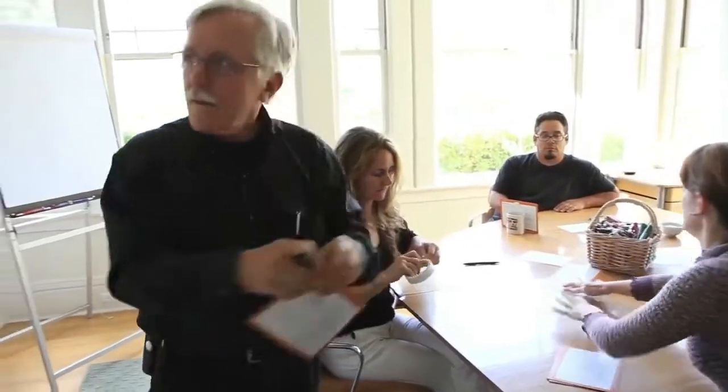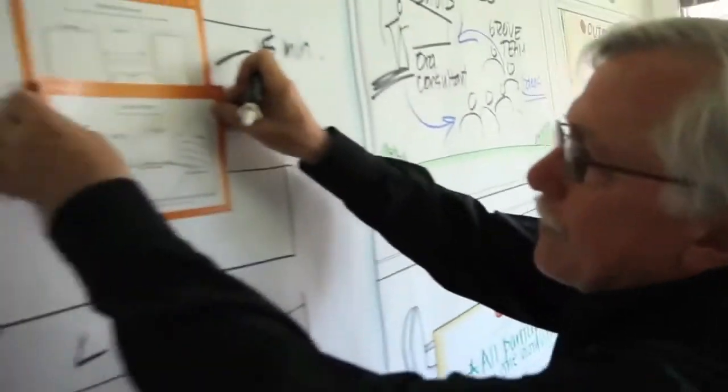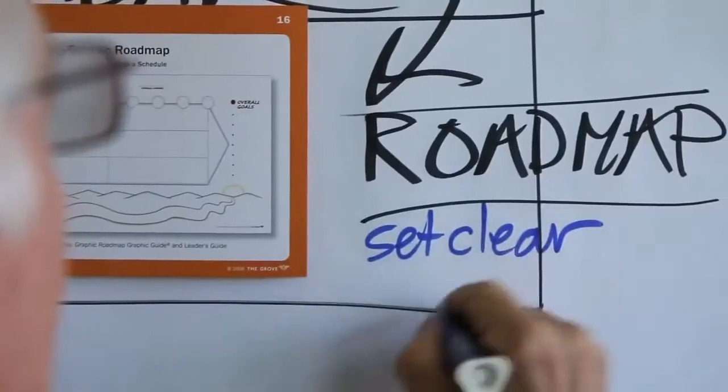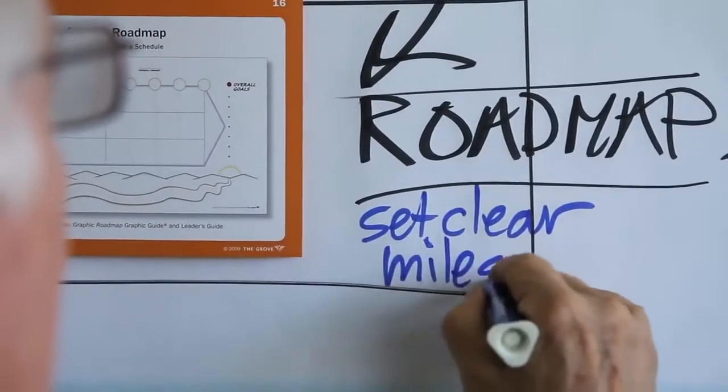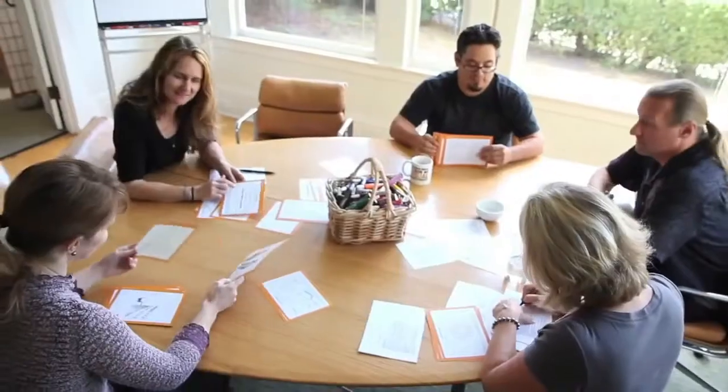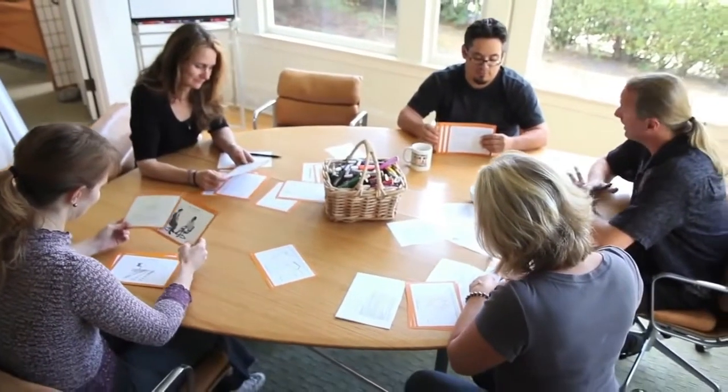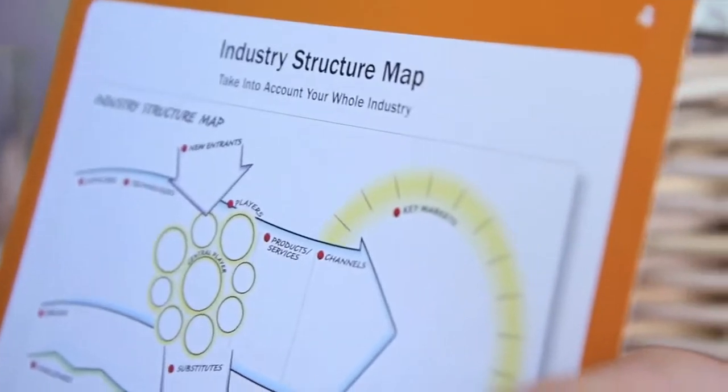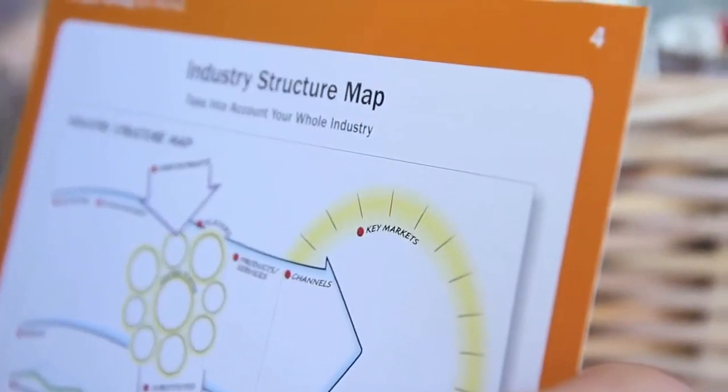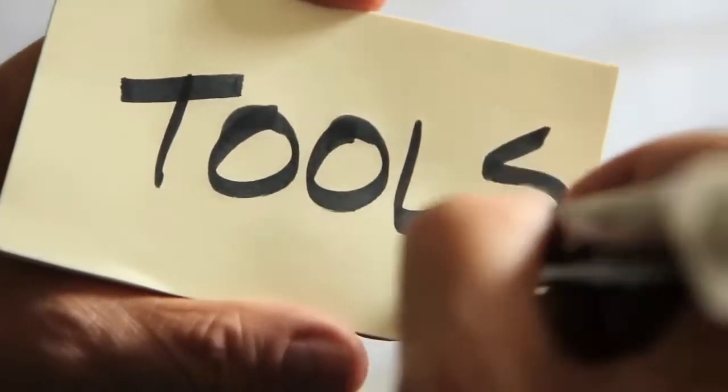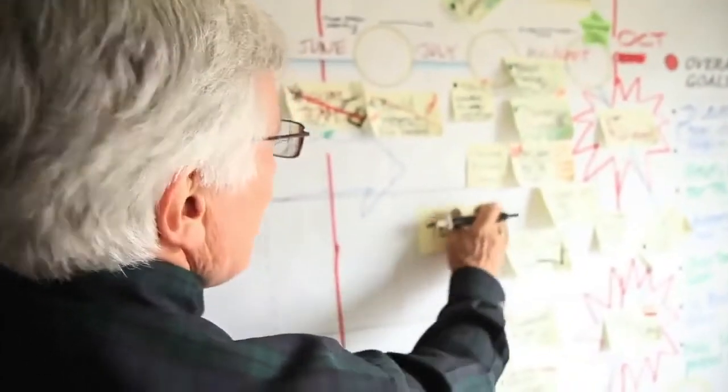Grove started out running visual meetings. Pretty quickly after that we started training people how to do this, and then we married the training programs with a tools production group that actually makes guides, templates, markers, sticky notes, and all the paraphernalia. So we are the go-to people for visual meetings and visual organizational process.